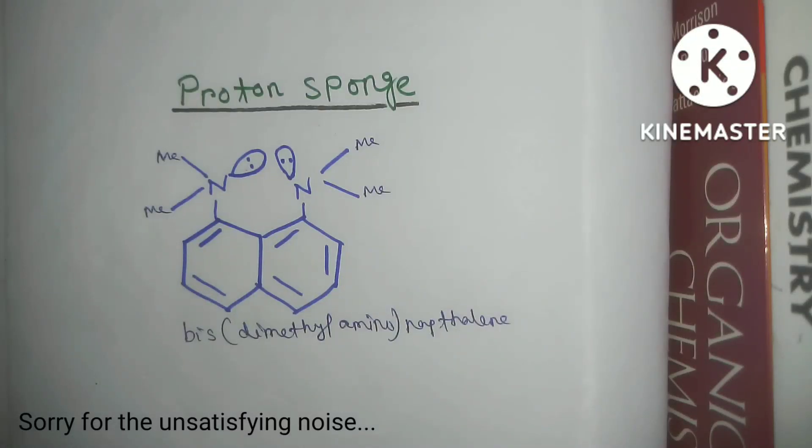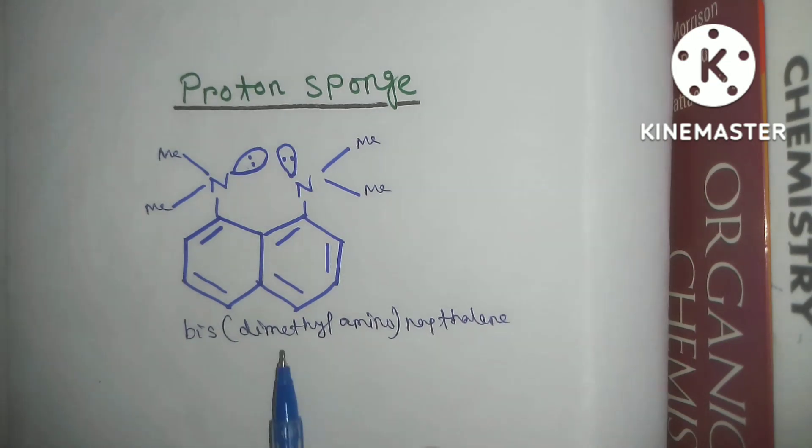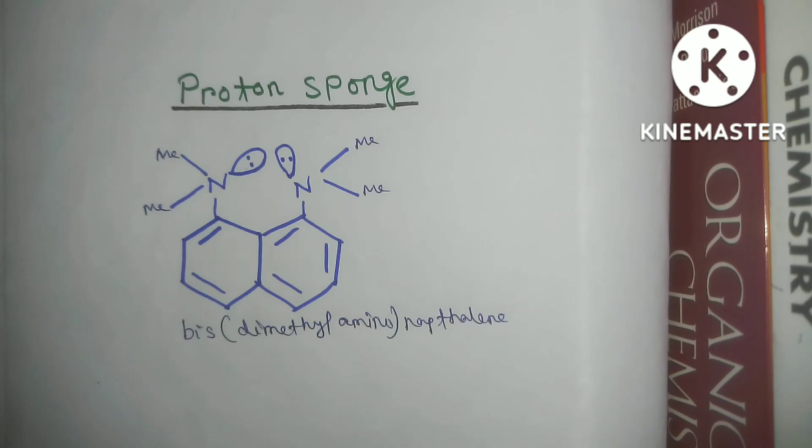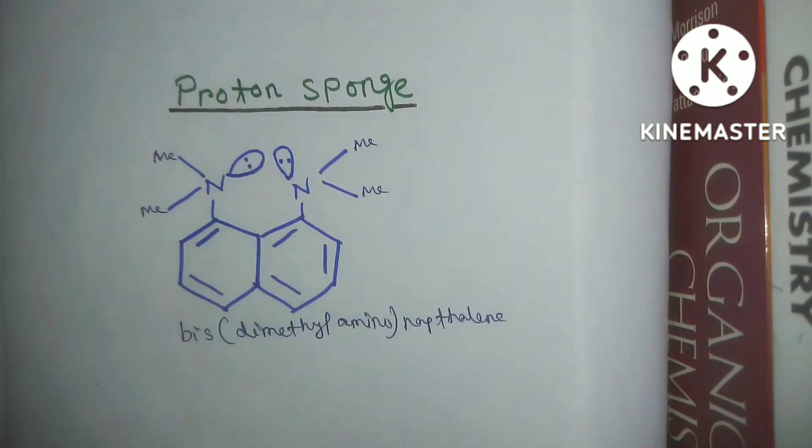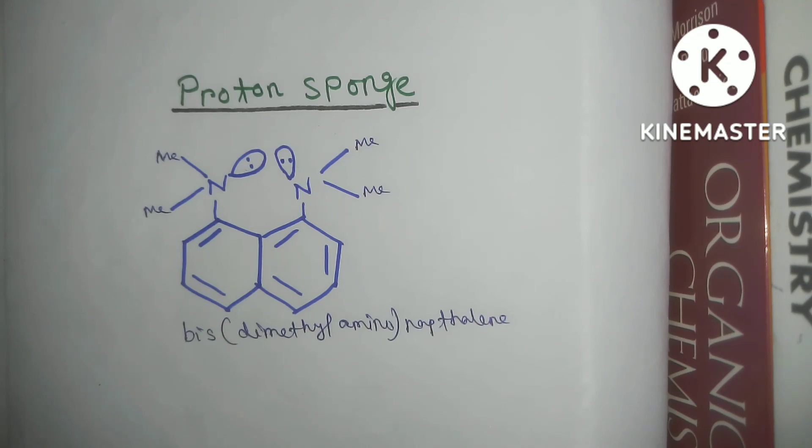Hello everyone, so today we are going to discuss a very important concept of basicity known as proton sponge. This compound is known as proton sponge, and the original name of this compound is bis(dimethylamino)naphthalene. Now we are going to learn why this compound is known as proton sponge.